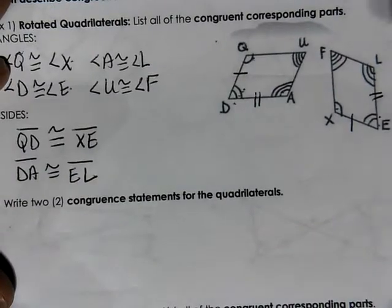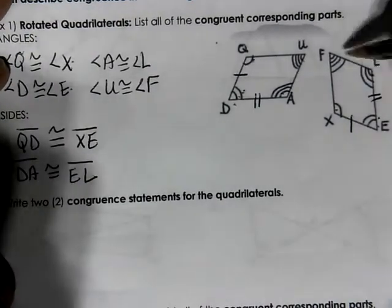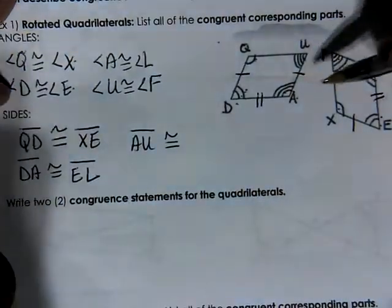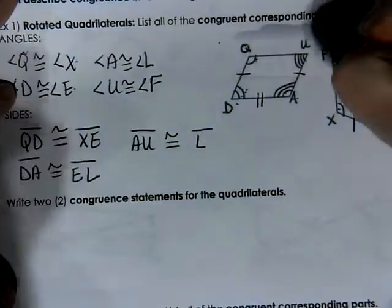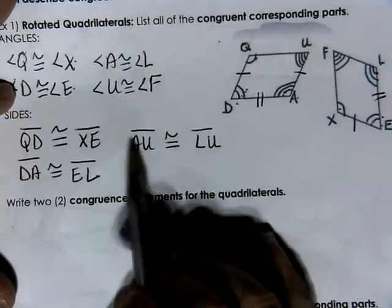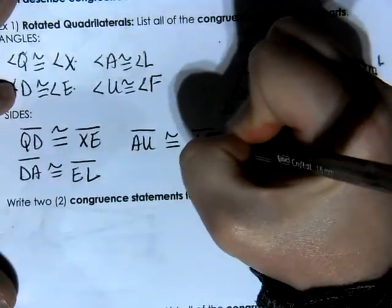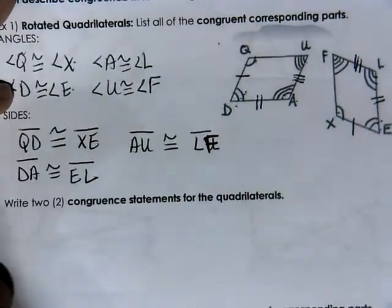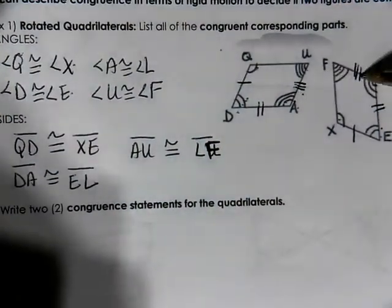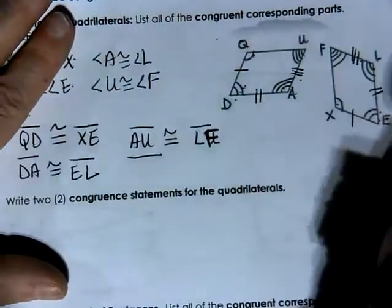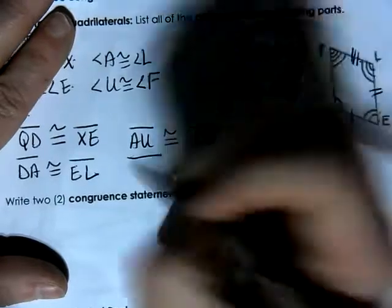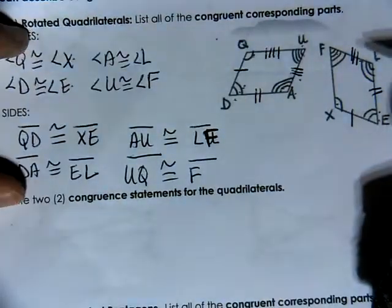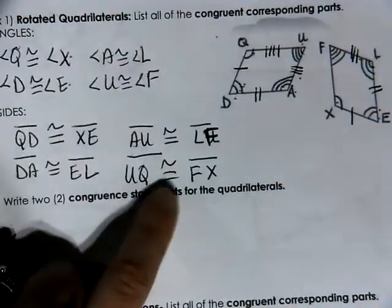Now matching three arc marks with four: segment AU is congruent to segment LF, since A matches with L and U matches with F — I need three tick marks on that. And finally, segment UQ is congruent to segment FX, since U matches with F and Q matches with X.